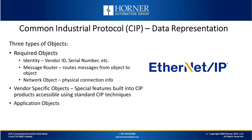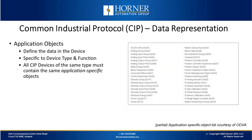The required objects are the identity object, which asks for a vendor ID, serial number, etc. The message router object, which routes messages from object to object, and the network object, which provides the physical connection info. Vendor-specific objects are special features built into CIP products that are accessible using standard CIP techniques. Application objects define the data in the device — they are specific to device type and function, and all CIP devices of the same type must contain the same application-specific objects.